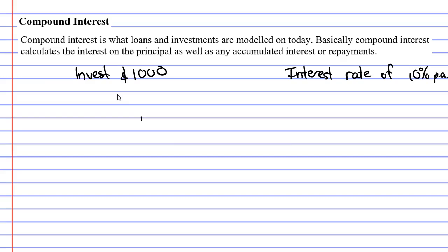Currently, you can't get an interest rate like that, but it's just a nice, easy one to calculate. So when you first put your money in, we'll call that the zero year. You have $1,000.